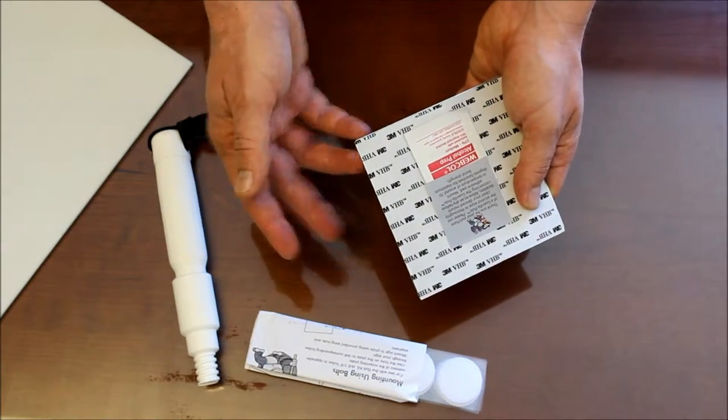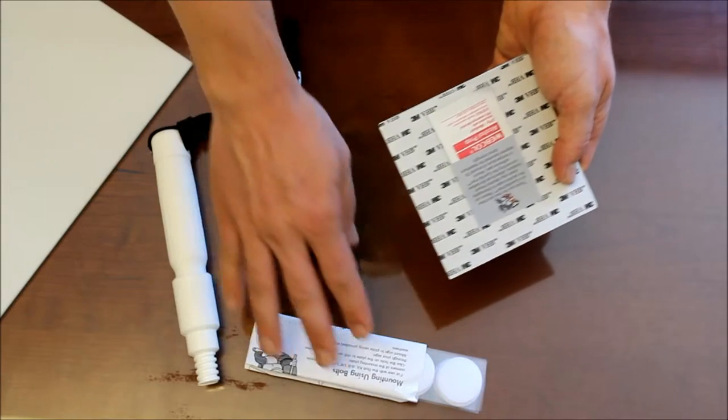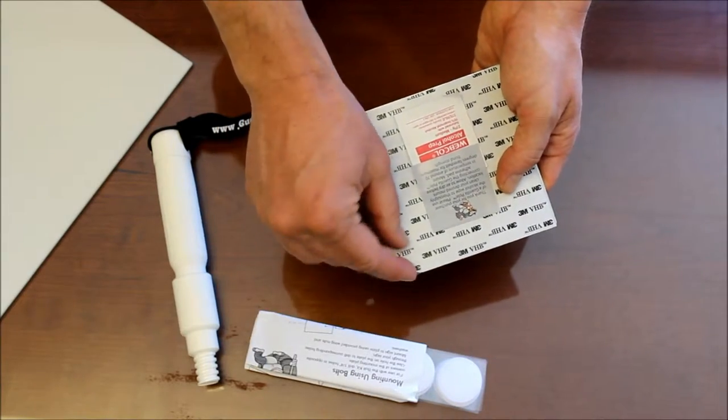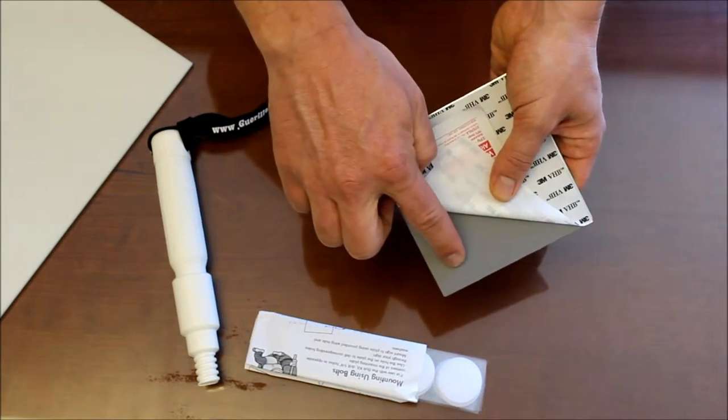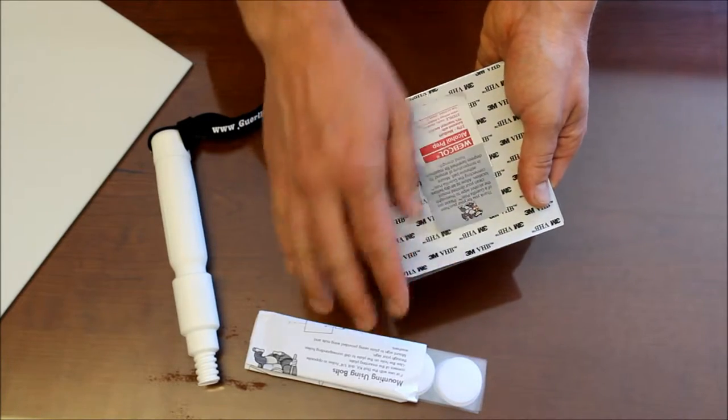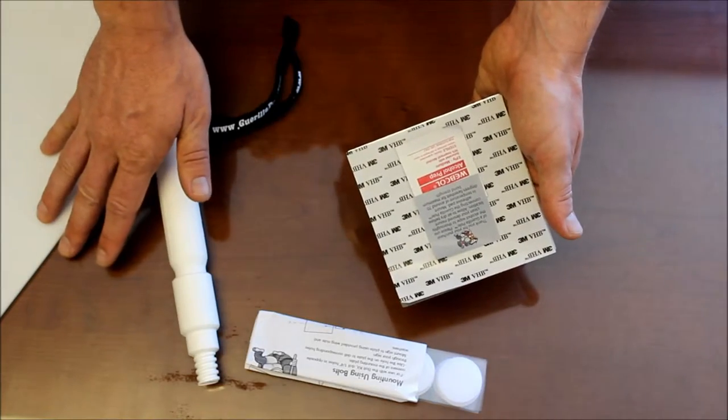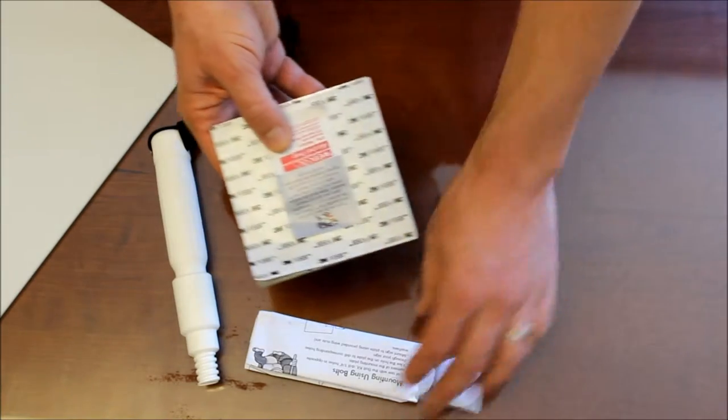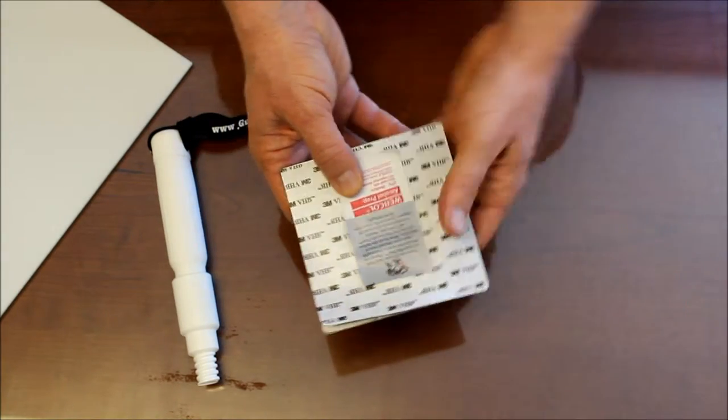So you have a couple of choices on how to attach this over to your sign. You can choose to use Velcro. If you do that, you do want to have the Velcro adhesive touch the adhesive on the back of the spinner head. Or you can choose to just go directly onto the sign. That's what we're going to do here today. So I will set my Velcro aside for another sign.